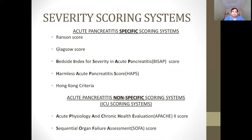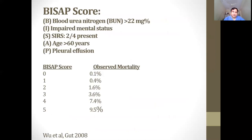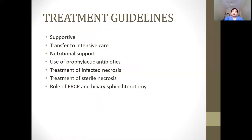There are many scoring systems — BISAP, Ranson, Glasgow, APACHE. I recommend the BISAP scoring system, which is new, easy to use, and good. BISAP stands for: B — Blood urea nitrogen more than 22; I — Impaired mental status; S — SIRS criteria; A — Age more than 60 years; P — Pleural effusion. Each criterion scores one point, and a score of five corresponds to approximately 9.5% mortality, allowing us to prognosticate the patient.